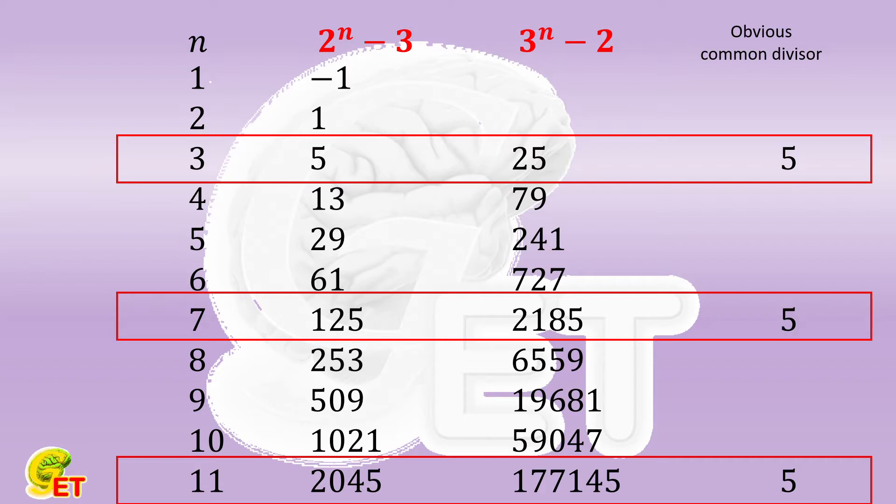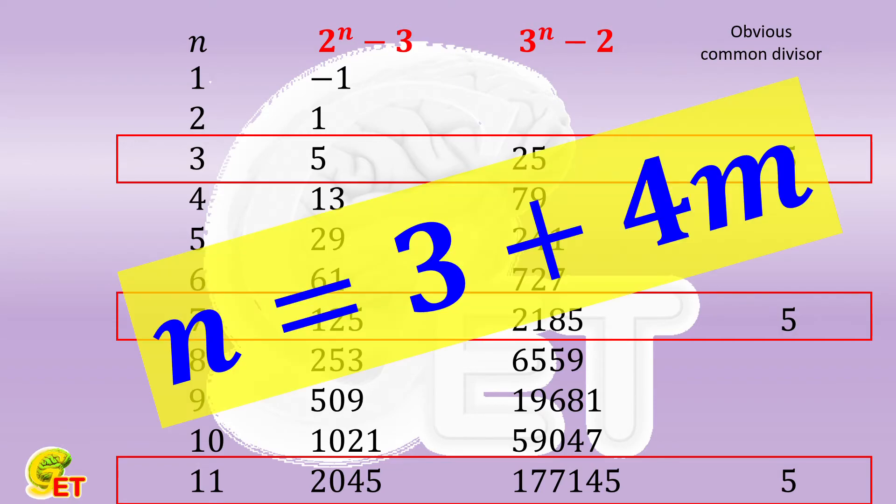In fact, it is very easy to prove that there is a common divisor of 5, because we only need to prove that its digit at 1's place is 5 or 0. So now, let's prove that when n is in the form of 3 plus 4 times m, the digits at 1's place of 2 to the nth power minus 3 and 3 to the nth power minus 2 are both 5.